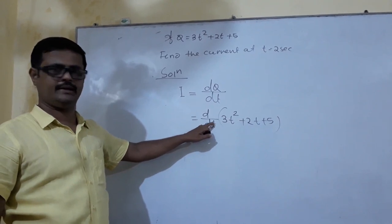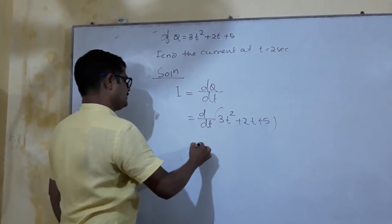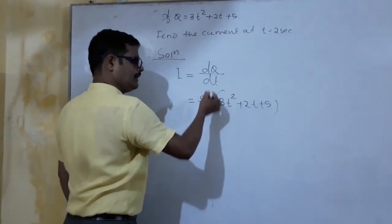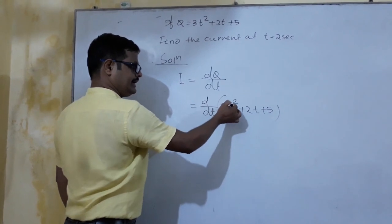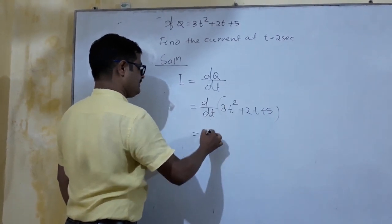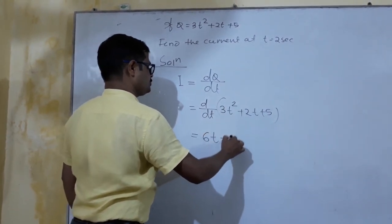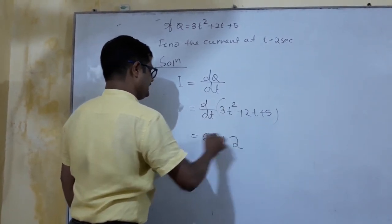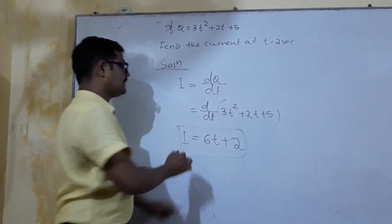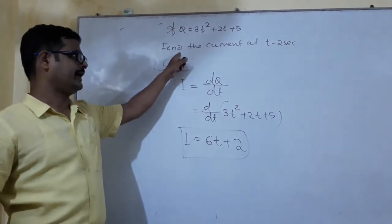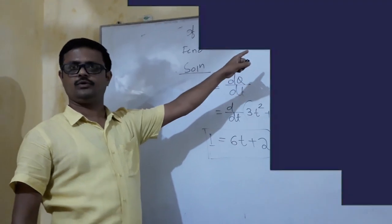We have the derivative which is equal to 6t plus 2. This is actually the current, and our expression for current is dq by dt equals 6t plus 2.